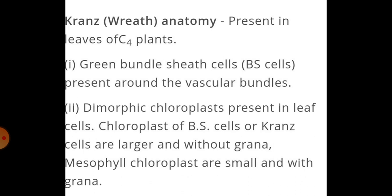This Kranz, or wreath anatomy as it is also called, is a special leaf structure. In such type of plants, in the leaves there are two types of cells present — like mesophyll cells, and cells known as bundle sheath cells. These bundle sheath cells are present just around the vascular bundle.